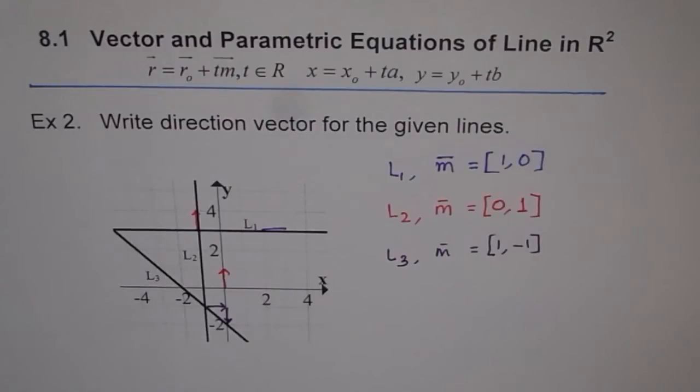In vectors also, we do a similar thing. We take a point and add multiples of direction vector. We'll see that in example 2. But the first thing is to understand how to get direction vector from a given line and what is direction vector.